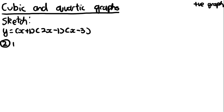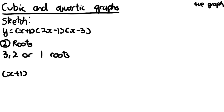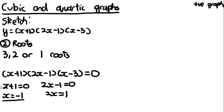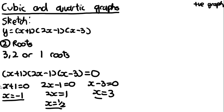The second thing to find is the roots. A cubic will have either 3, 2, or 1 roots. In factored form it's easy: set y = 0, and each bracket gives a root. For our example: x + 1 = 0 gives x = −1; 2x − 1 = 0 gives x = ½; and x − 3 = 0 gives x = 3. Those are the three roots.